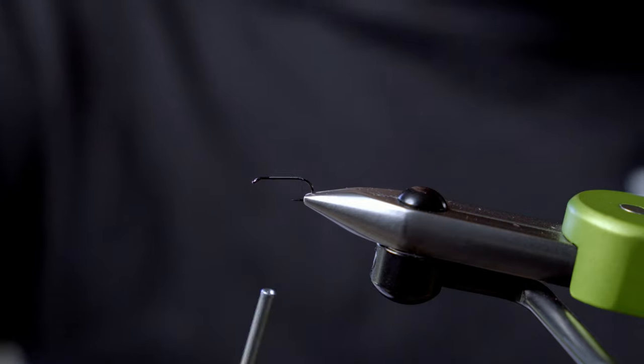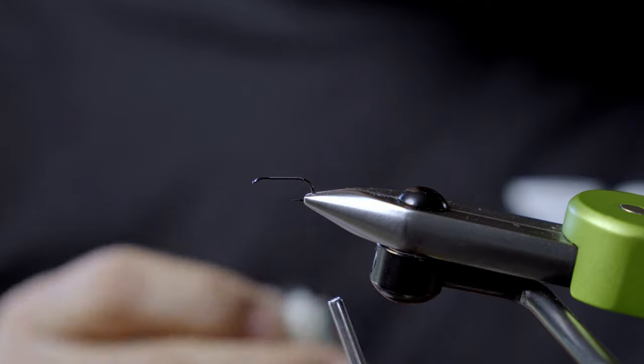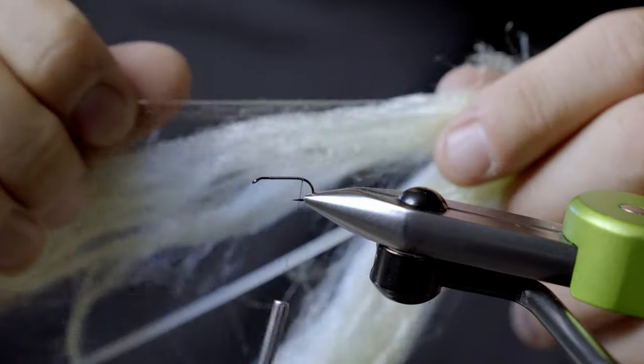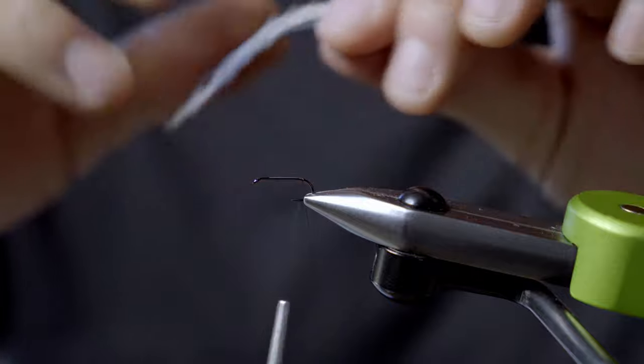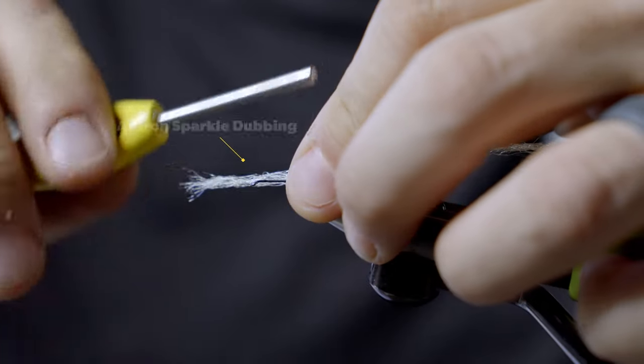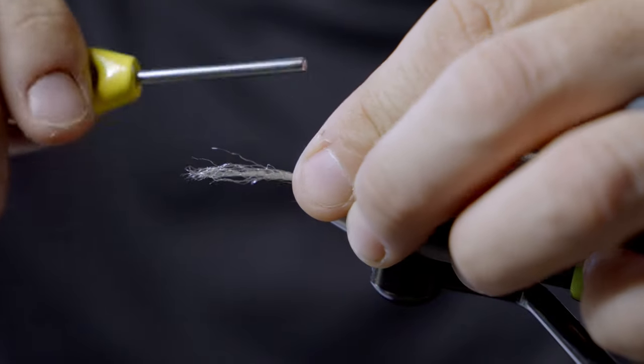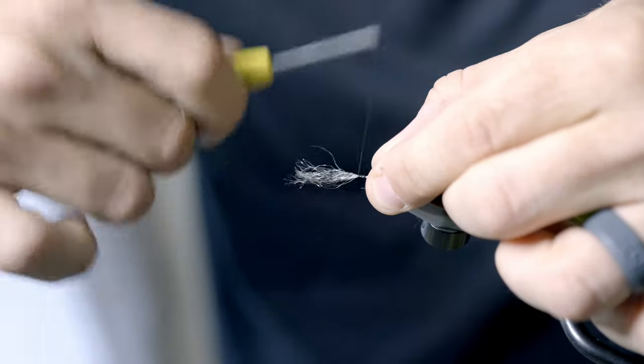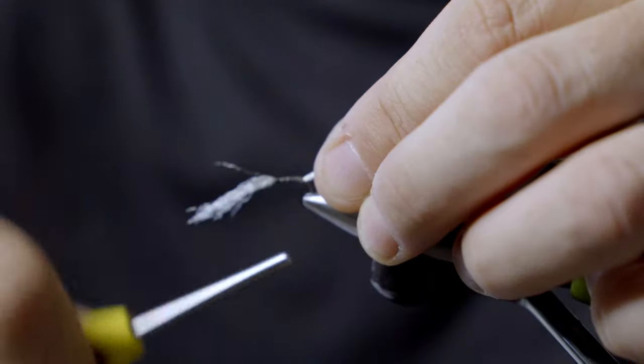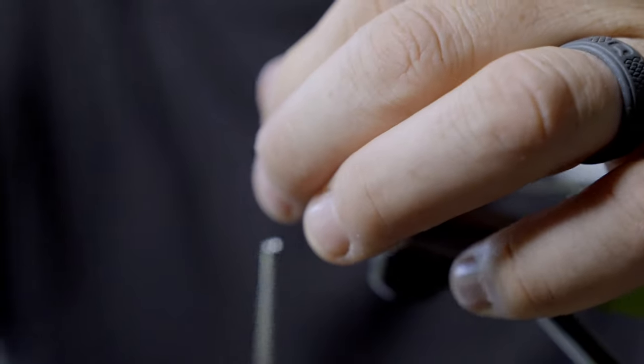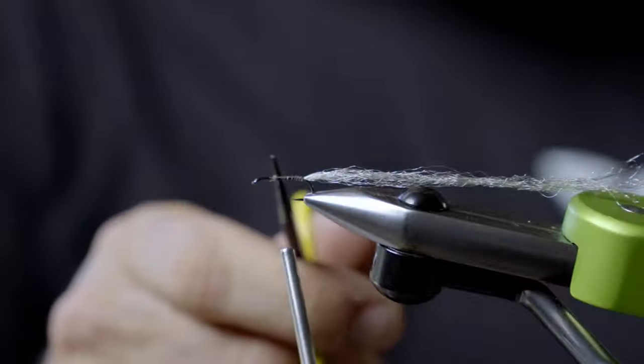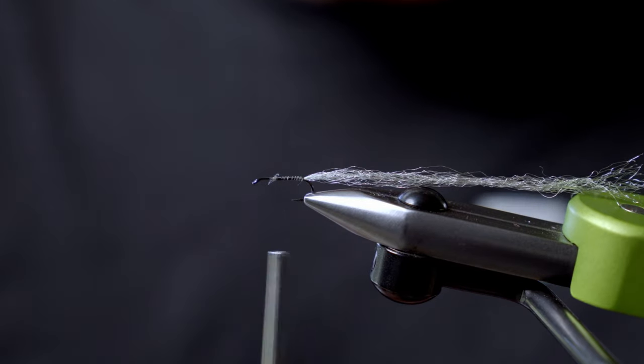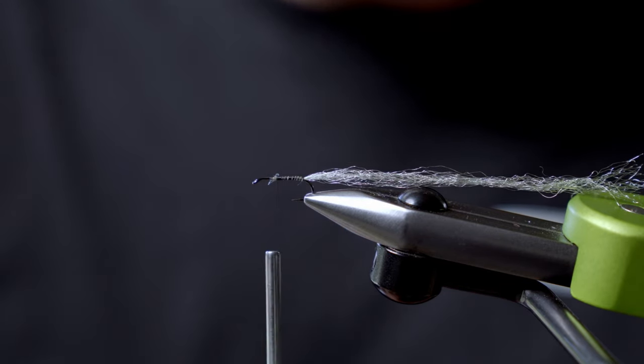Now again, with any of my patterns, as I always say, you can tie this in any color that fits your hatch or your river or lake. But for me, I'm going to use this light sparkle Antron for a shuck. I'm going to pull a small little piece off, and one thing I do is I tie it right on to the hook shank, tie it right on top to give that full bodied look. I'm going to keep a consistent size, and one thing I'll do is I'll stop it right where I want to start the next part of the fly.